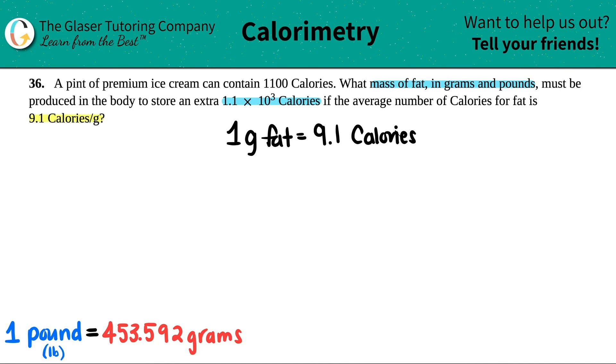Now here someone has eaten some premium ice cream, and they want to know what's the mass in grams and pounds that must be produced in the body to store those extra calories. The first part of the question we don't even need because they gave us this amount. This 1.1 times 10 to the 3 calories is the number that we need. I'm basically just going from calories to how much mass was needed to produce that amount of energy.